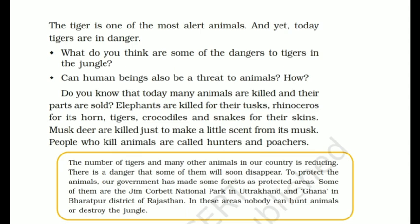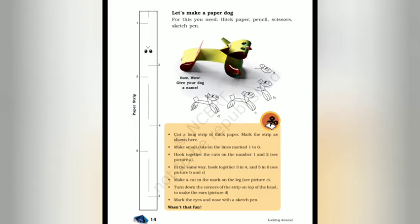Page number 14 पर एक मस्त activity आने वाली है। देखिए — यह paper dog है — आप सबको इसे बनाना है। Paper dog बना सकते हैं, paper tiger बना सकते हैं। यह आपको काटेगा नहीं! इसे एक unique नाम रखना है। Left side में strip बनाई गई है — paper को कैसे cut करना है। इसके लिए एक plain paper, pencil, scissors, और sketch pen चाहिए।